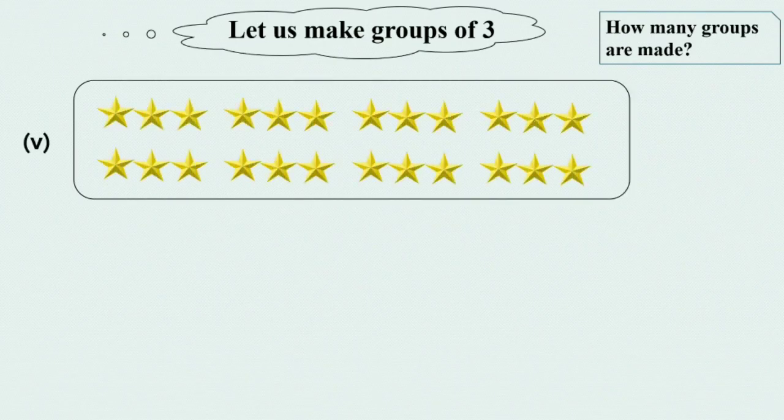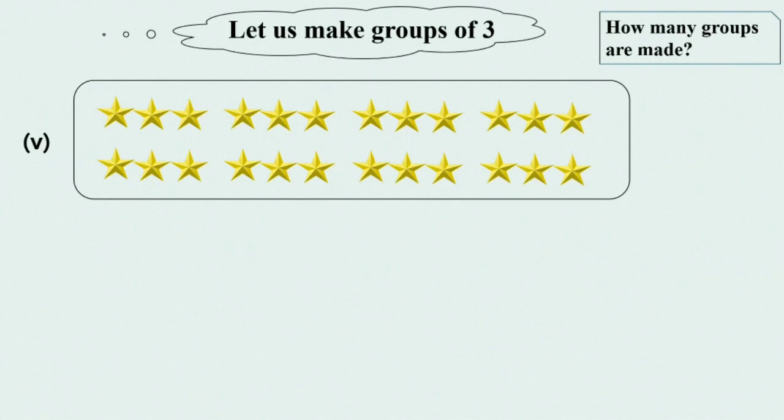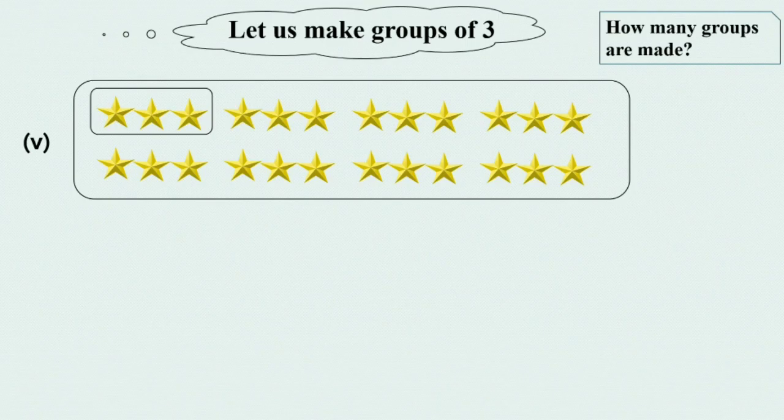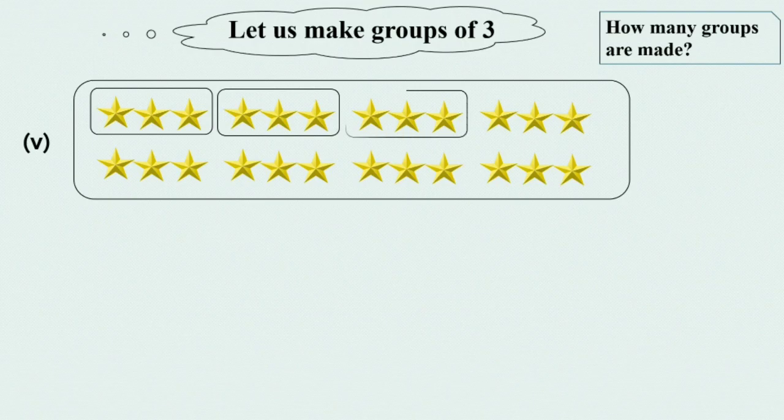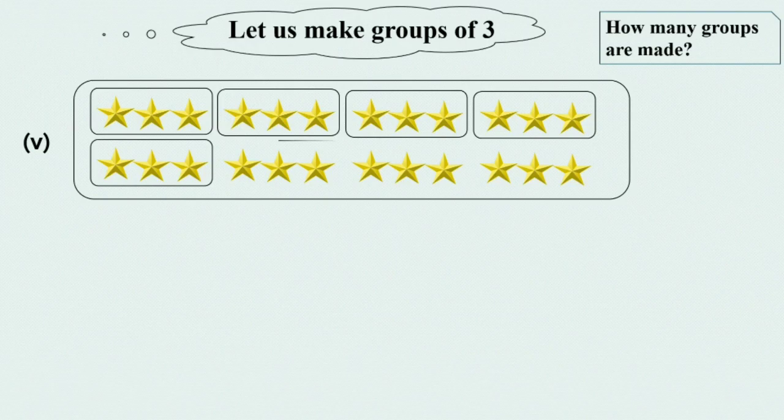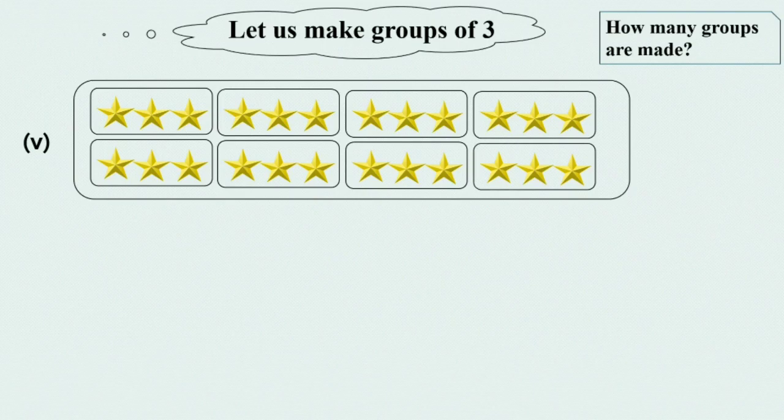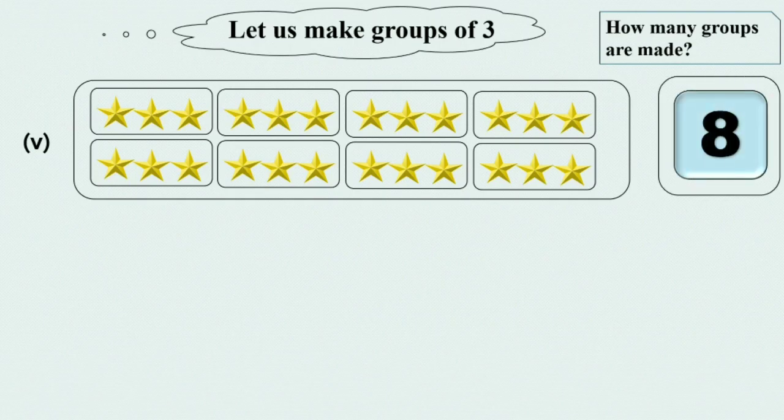Moving to our next question. We have some stars. These are 24 stars. We have to make groups of 3. Here we make 1st group of 3 stars. Many stars are left. We will keep on making groups of 3. 1 group is ready and here is 2, 3 groups, 4 groups, 5 groups, 6 groups, 7 groups and 8 groups. Here we have made 8 groups. No star is left. So we will write 8 in the box.